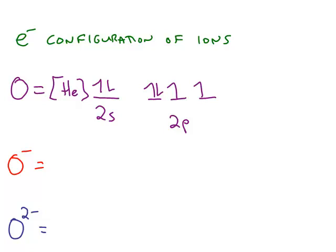So far we've been looking at the electron configuration of neutral atoms. We can also do this for ions. So, for example, here is the orbital diagram for a neutral oxygen atom.